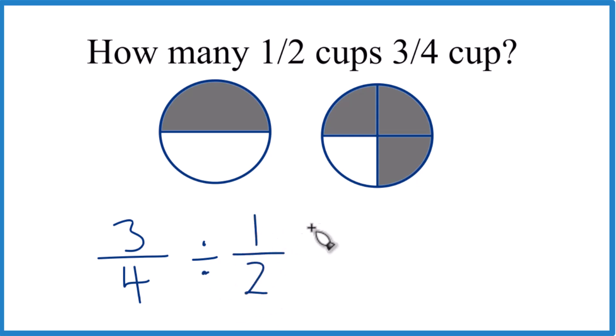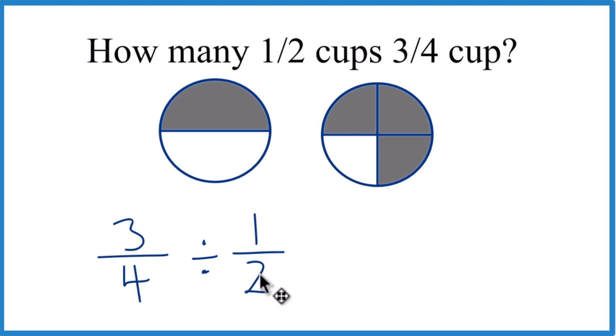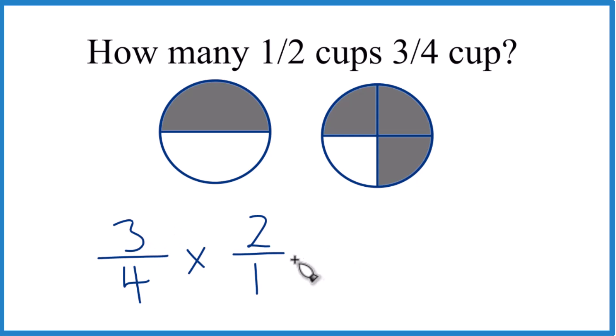The way to do this though is to take the two, move that up here and the one down here. That's the reciprocal. Then instead of division, we can just multiply: three times two, that equals six; four times one, that equals four.